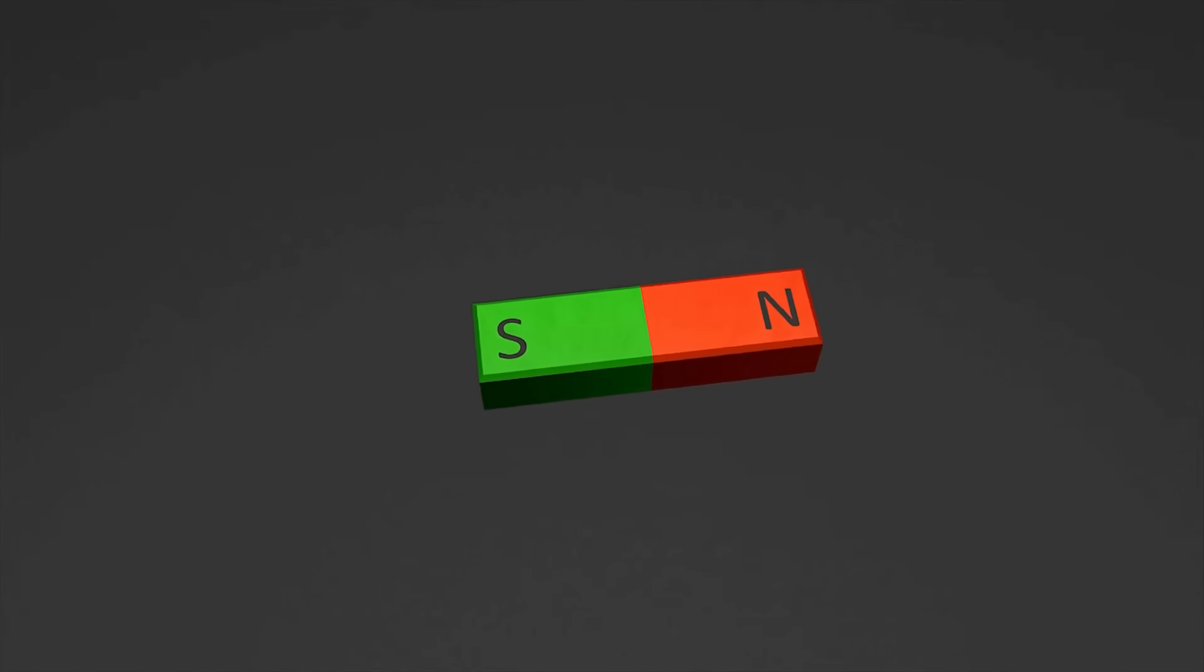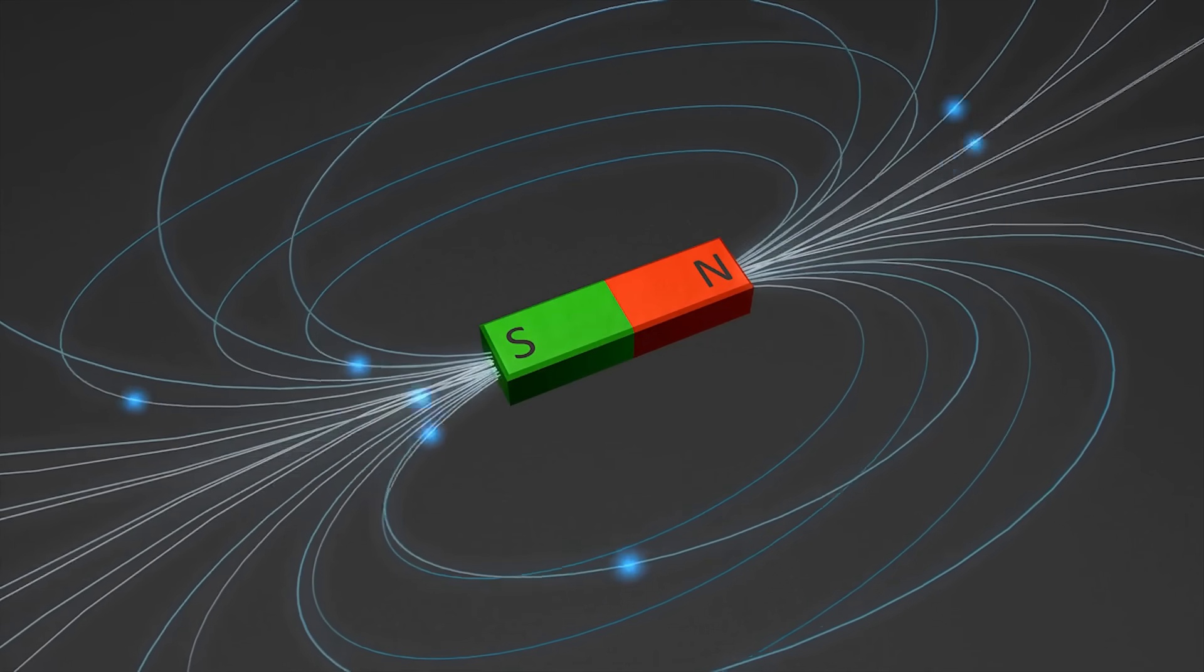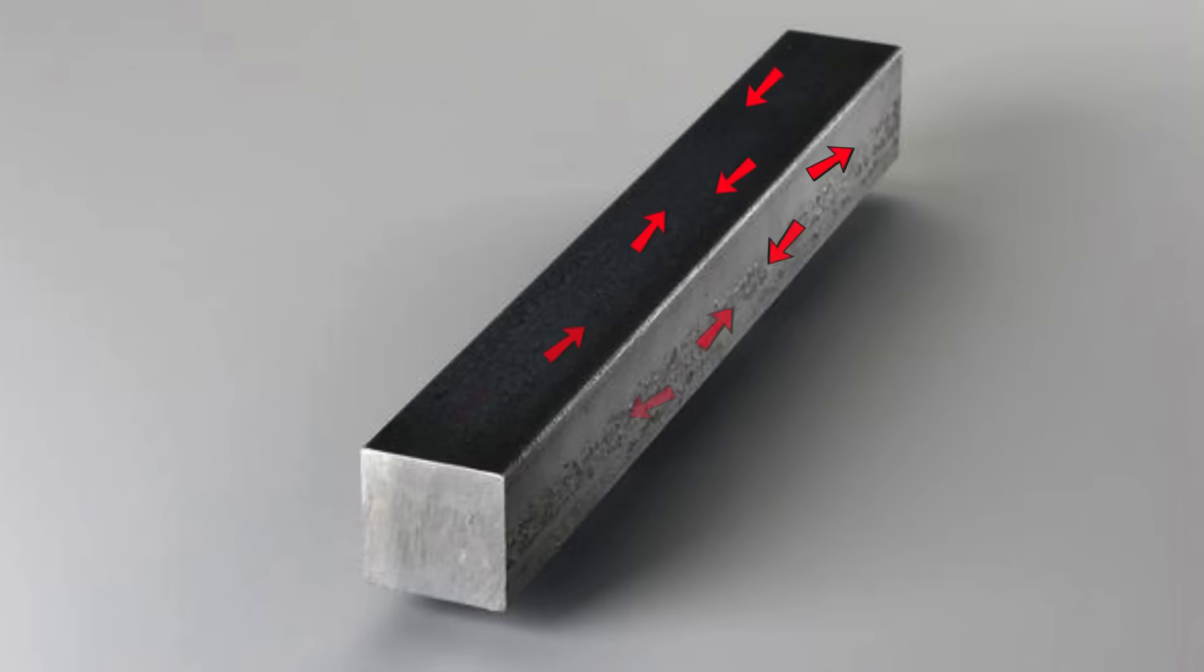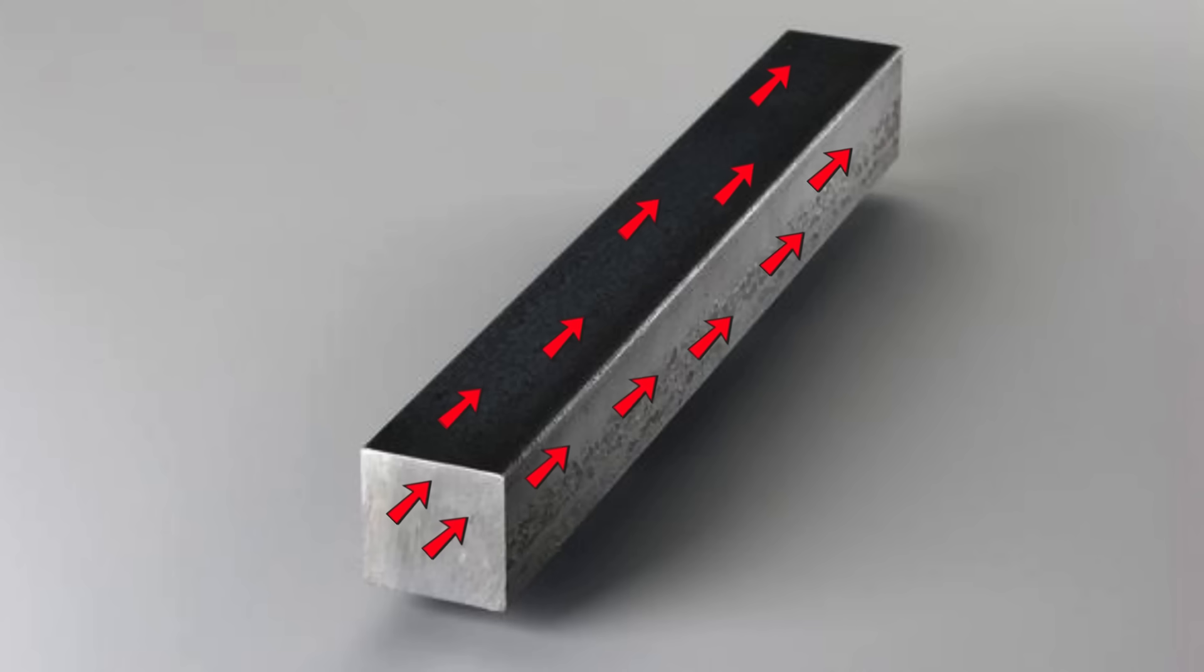So, how does the metal become a magnet? When the Alnico metal is exposed to a magnetic field, these tiny magnetic domains inside the metal align in the same direction. Before this alignment, the domains are scattered, and the metal doesn't act like a magnet. But once they align, the metal becomes a true magnet, able to attract and repel, just like how the Earth's magnetic field influences objects around it.